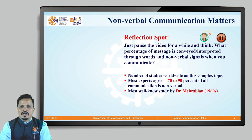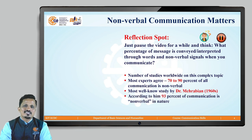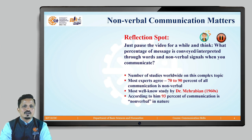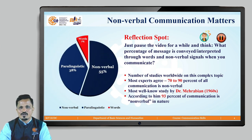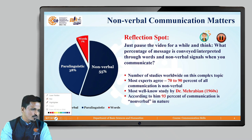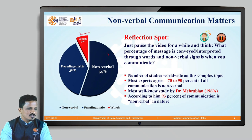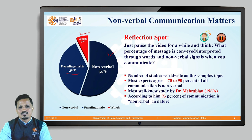The most well-known study is by Dr. Mehrabian in the 1960s, which says that around 90% of communication is nonverbal in nature. Only 7% is words. As shown in the pie chart by Dr. Mehrabian, through words we communicate just 7%, body language or nonverbal communication accounts for almost 55%, and 38% is paralinguistic features.